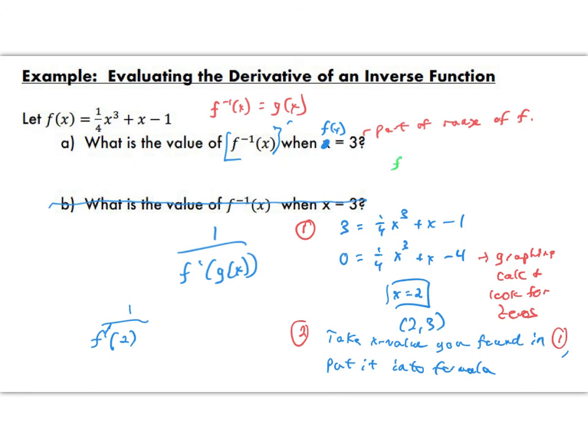We just need to find what f prime of 2 is. Off to the side here, I'm going to find f prime of x, which is 3 fourths x squared plus 1. If I put in 2, I'm going to get 3 fourths times 2 squared plus 1. 2 squared is 4, and 4 and 4 cancel out. 3 plus 1 is 4. So the answer I'm going to get for my question, finally, is 1 over 4. 1 fourth is the slope of the derivative at that point.